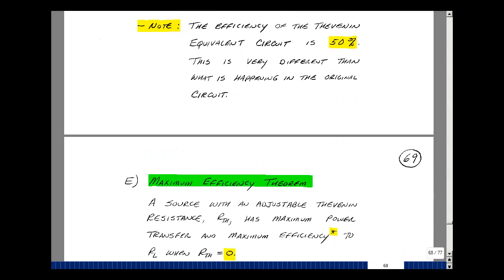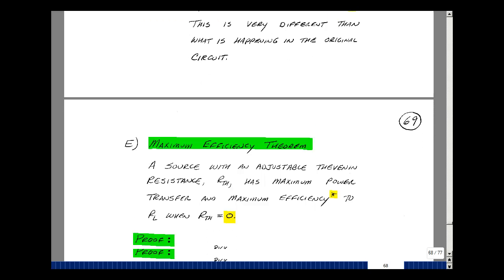This leads us to another idea called the maximum efficiency theorem. Let me state it. A source with an adjustable Thevenin resistance called R Thevenin has maximum power transfer and maximum efficiency to R sub L when R Thevenin is equal to zero. Now what's different here is that I'm adjusting this, not to get the most power in this, but to get the most power in this. So it's a very different set of conditions than we had previously.